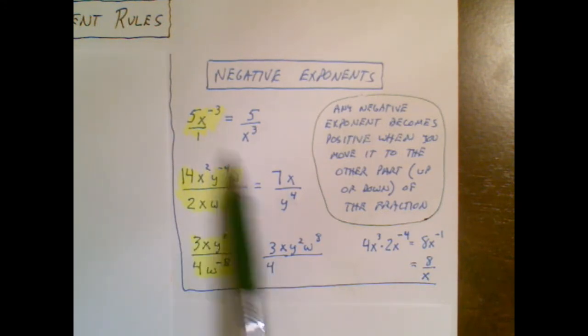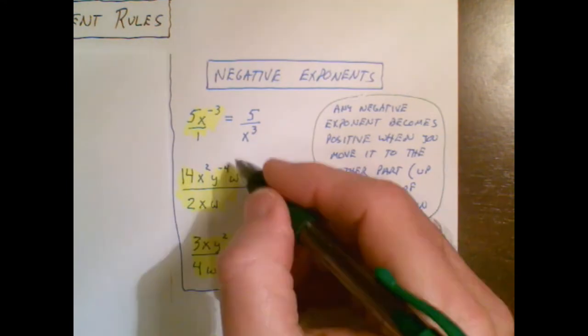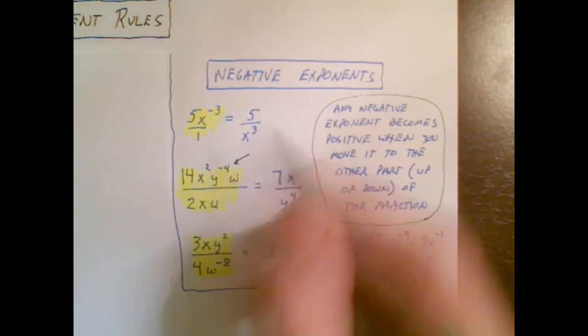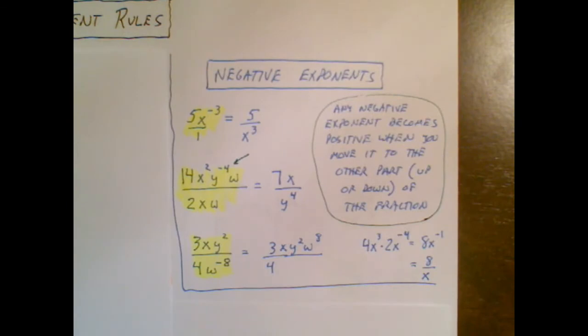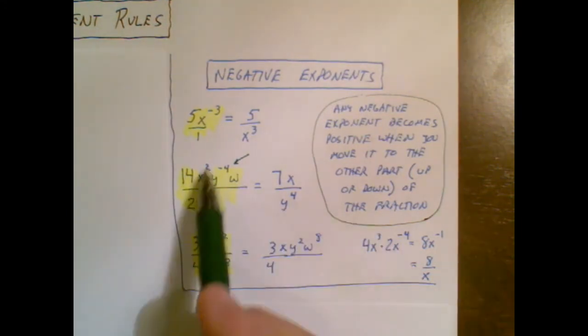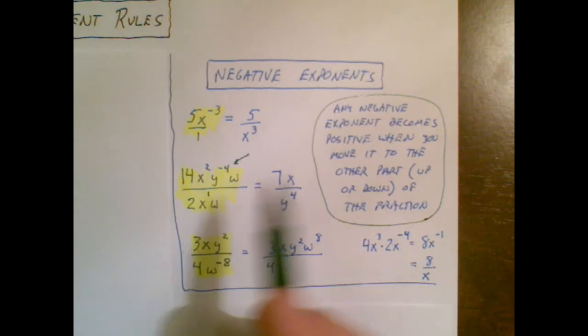We've got a lot going on but there's only one part that has a negative exponent and that's the y to the negative 4. So we'll get to that in a second. 14 over 2 reduces to a 7. x to the second over x to the 1. The rule says when you divide you subtract exponents so 2 minus 1 is 1.